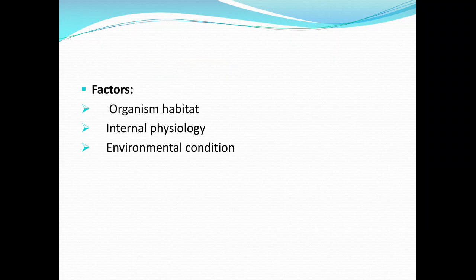Number one factor is the organism's habitat — the place where the organism lives also plays a very significant role in the process of reproduction. The second factor is internal physiology: organisms have reproductive capability which is due to internal physiology, which we will learn in further chapters. The third factor is environmental condition — the surrounding also plays a very significant role in reproduction.